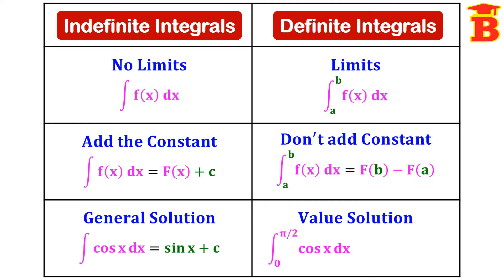For example, take the same function: integral of cos x dx with limits from 0 to pi by 2. After integrating, cos x becomes sin x, and we apply the limits. Upper limit: sin(pi/2) equals sin 90° which is 1. Minus lower limit: sin(0) which is 0. So this is 1 minus 0, which equals 1. Finally we get the value 1.